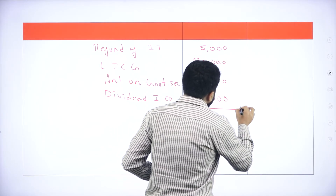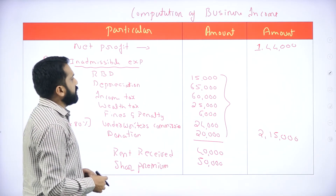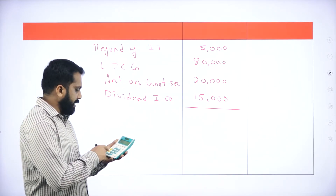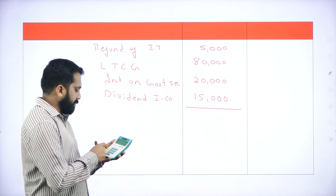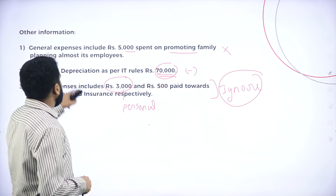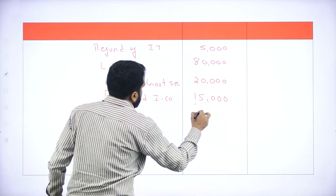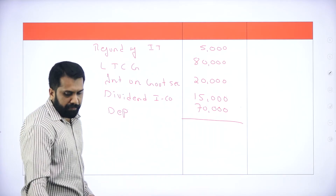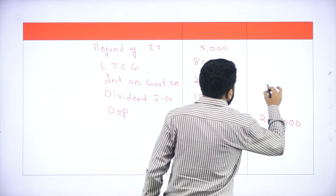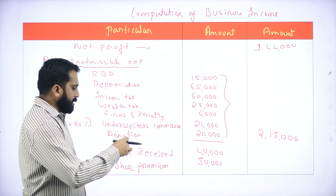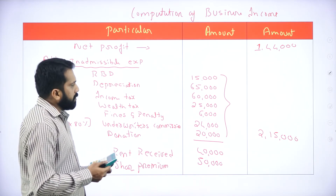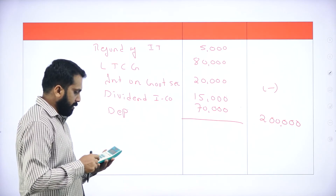We're done with those informations. So: 40,000 + 50,000 + 5,000 + 20,000 + 15,000 = 1,30,000. Along with that, we have one more adjustment — that is Depreciation 70,000. Adding 70,000, we get 2,00,000, which we are supposed to minus. So: 1,44,000 + 2,15,000 − 2,00,000 = 1,59,000. [Instructor states 1,50,000.]